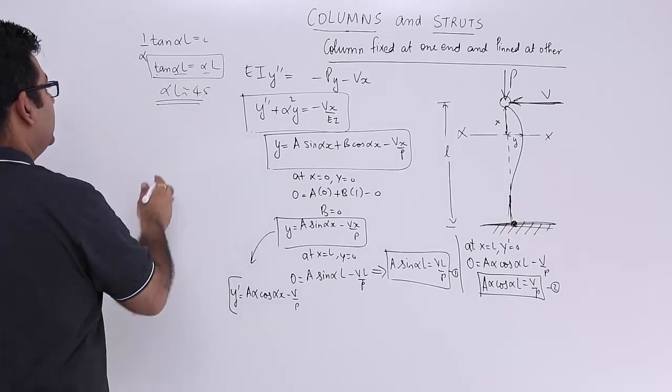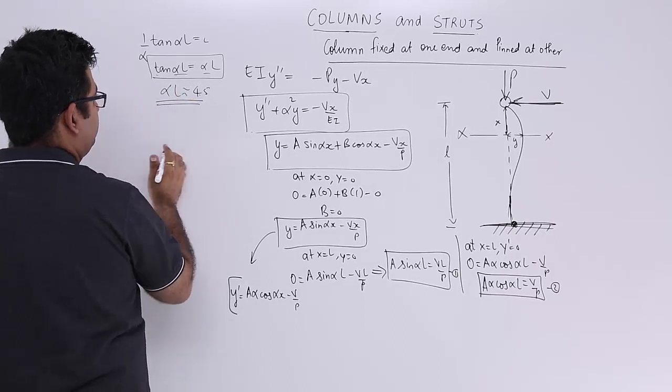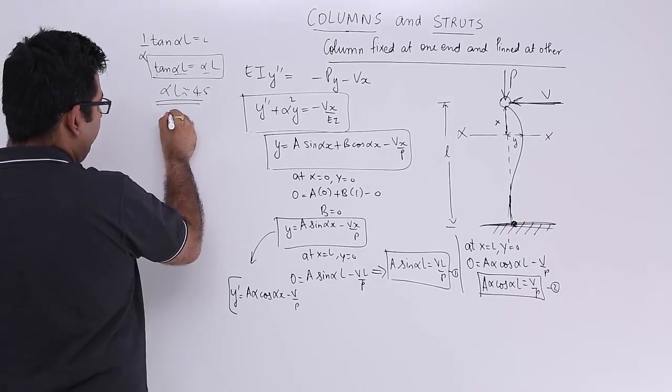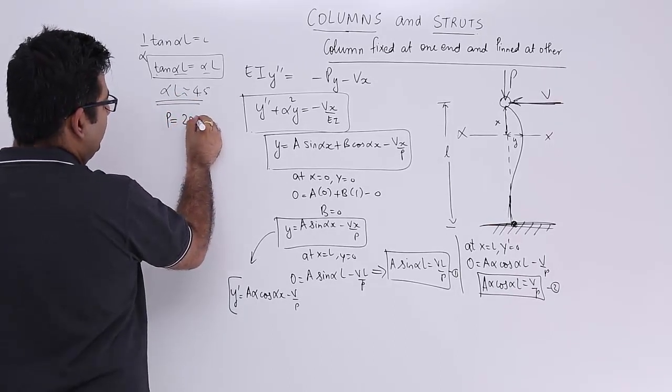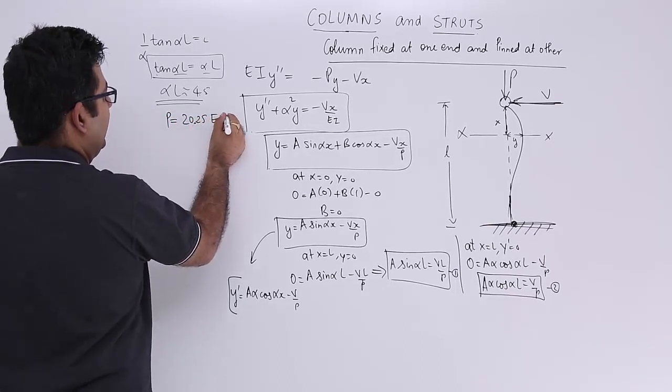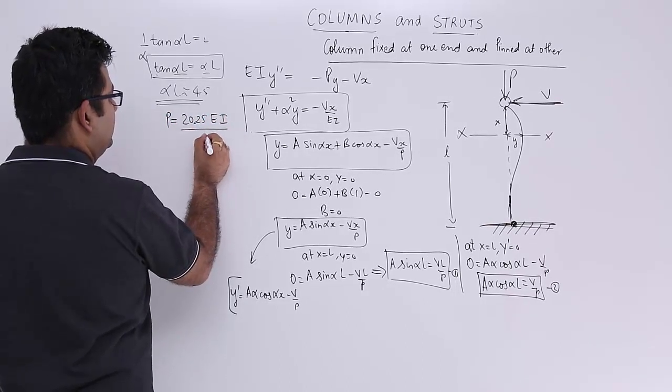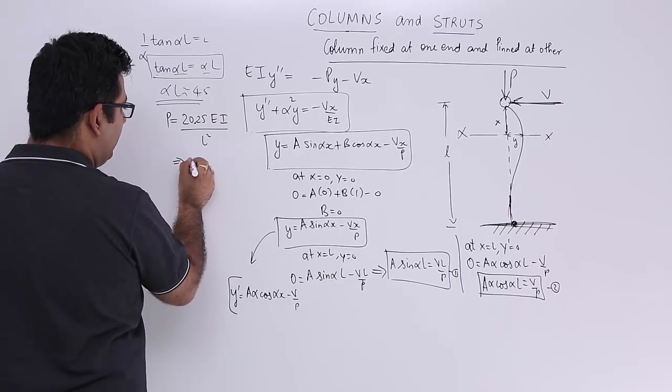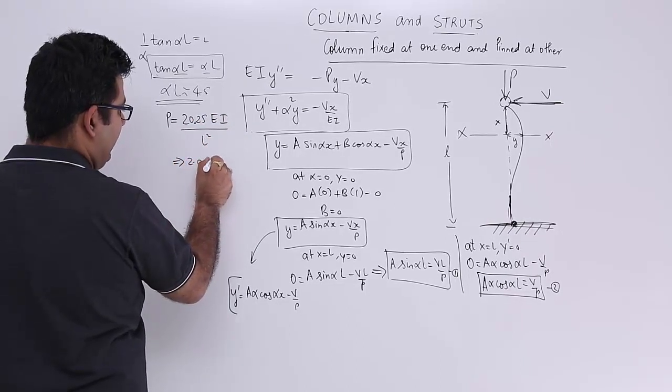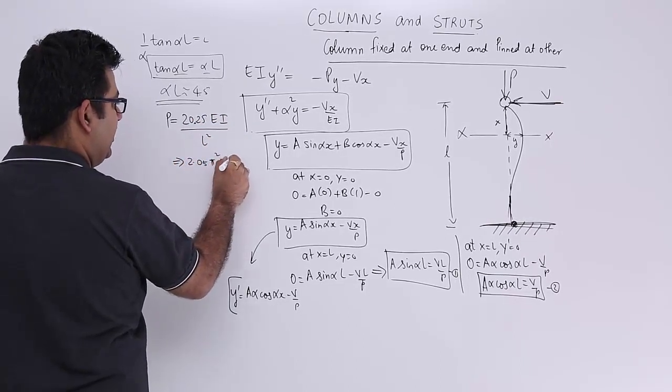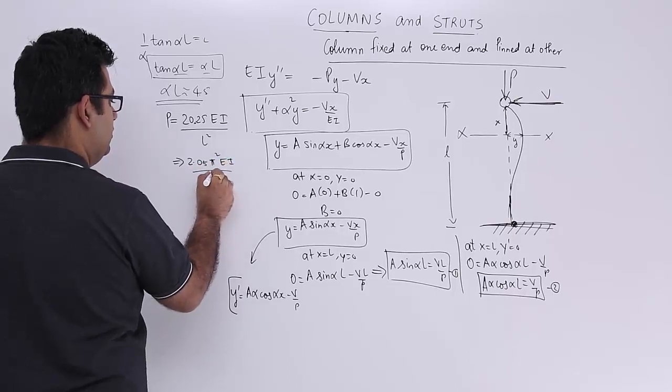So let's square it. So upon squaring we get the value for p as 20.25 times EI upon l square. So this is further written down as 2.05 times pi square EI upon l square.